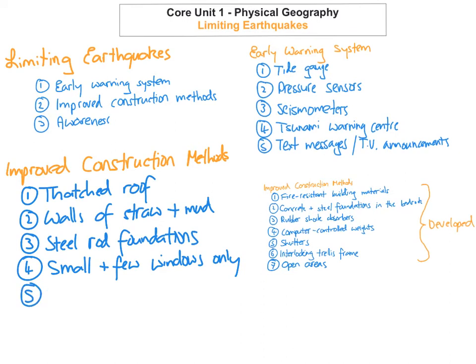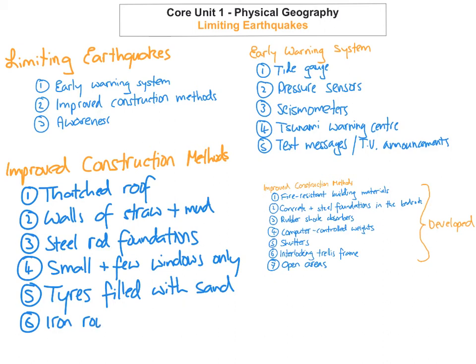Instead of manufactured shock absorbers, they can make their own by filling tires with sand and placing them in the foundations of the house — these act as their very own shock absorbers. Finally, developing countries can use iron roofs, which are very light but also strong and help the roof stay on during seismic activity.